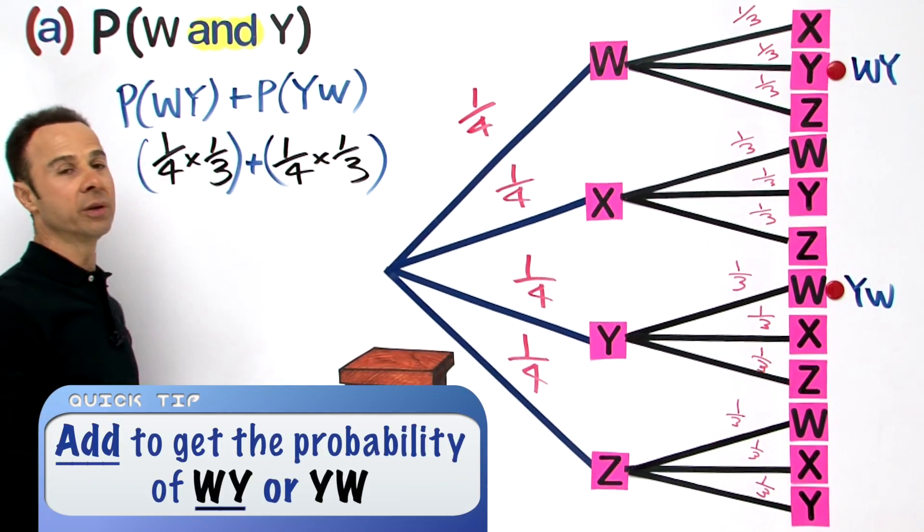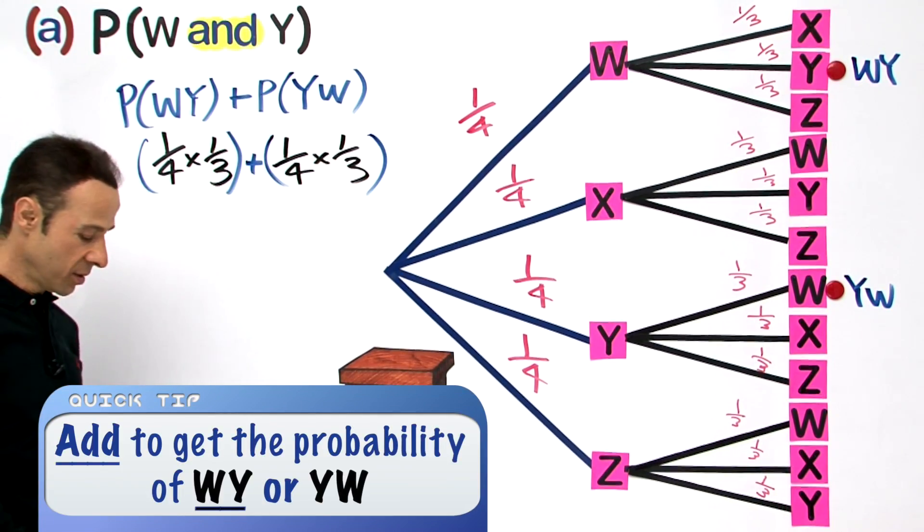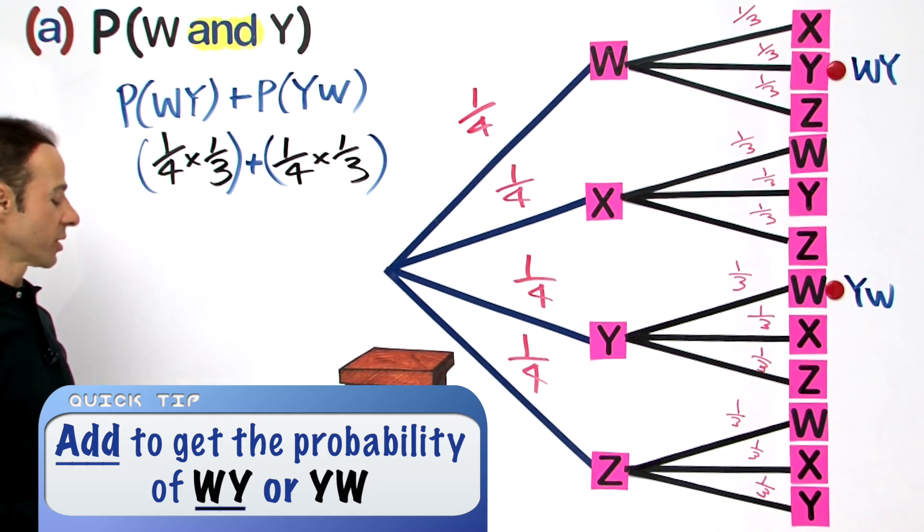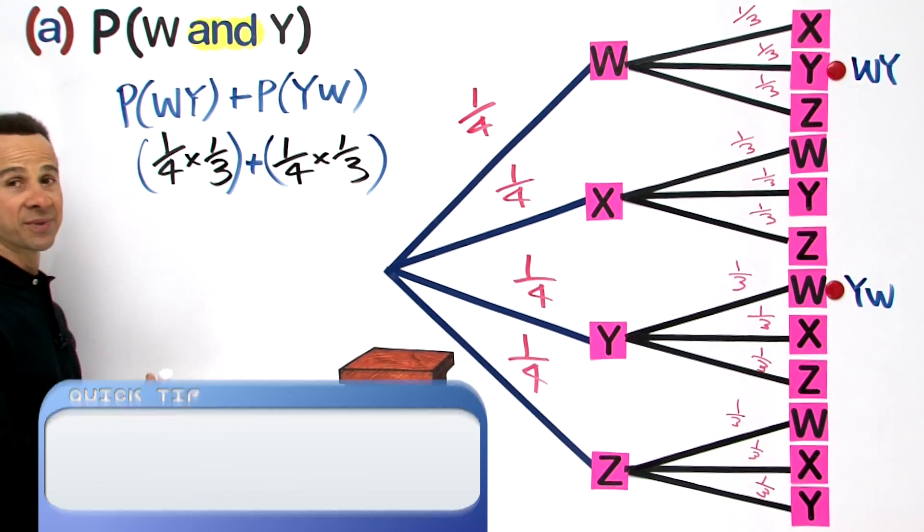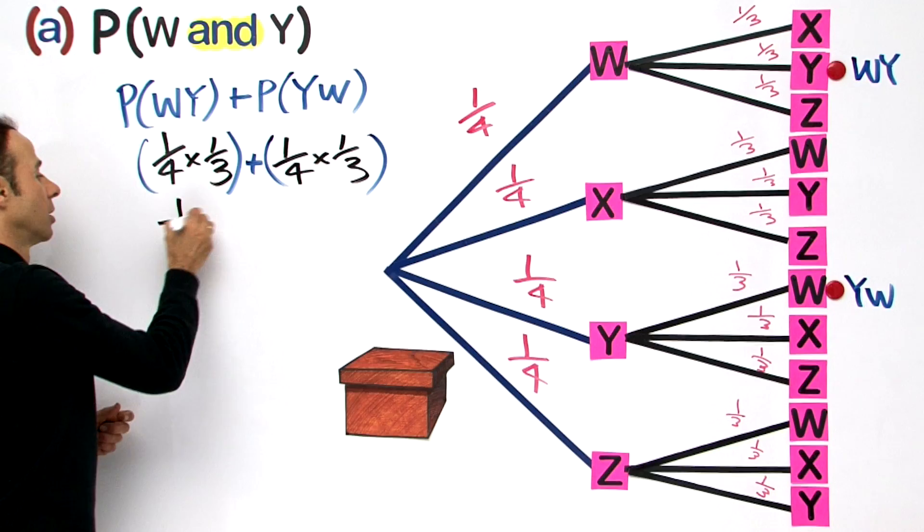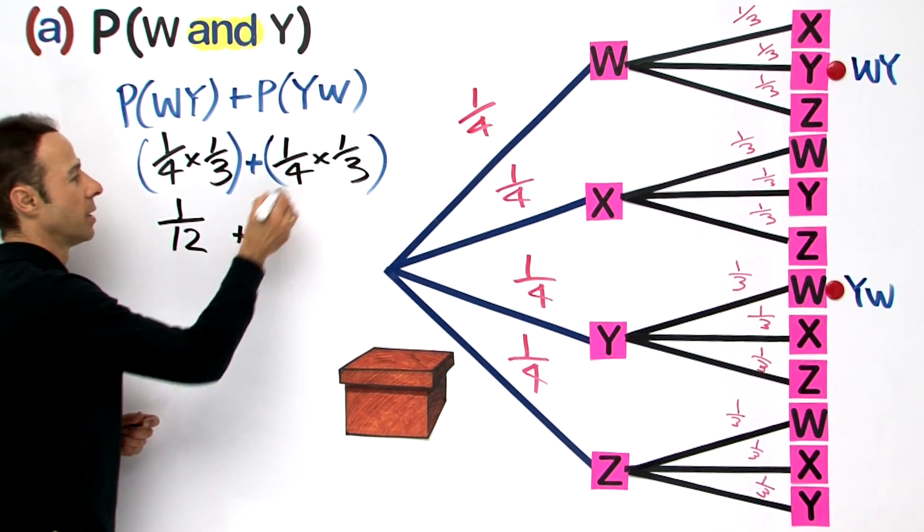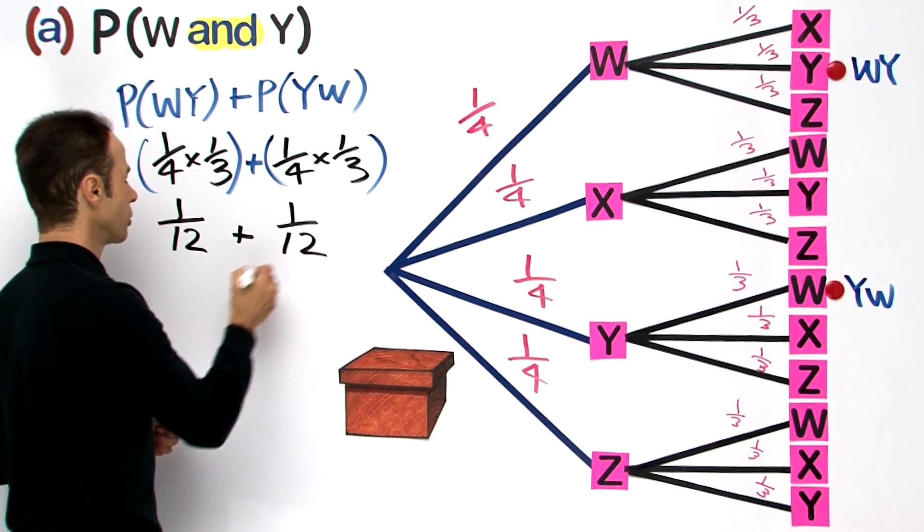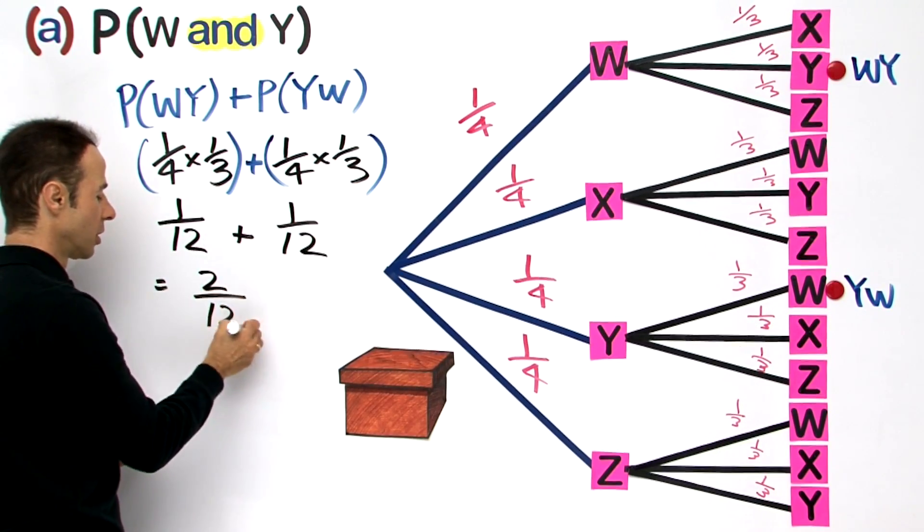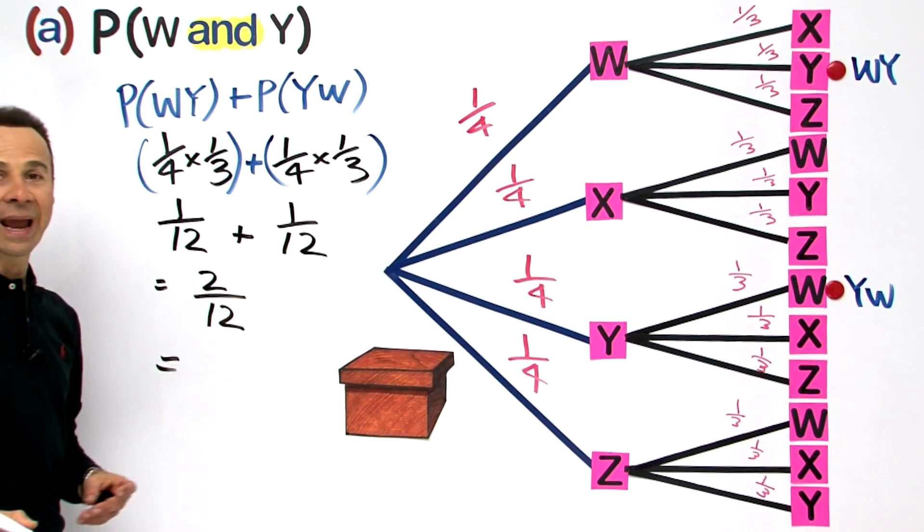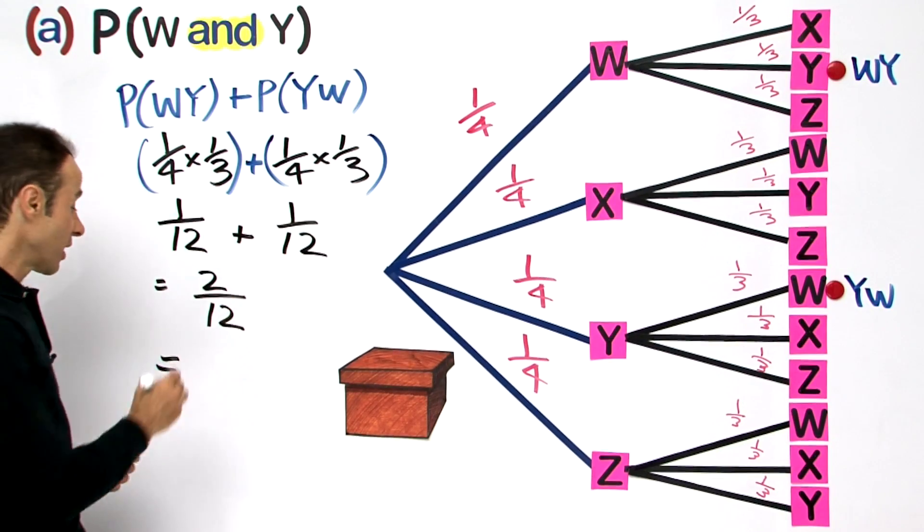Let us put the brackets, and of course let us put that OR in between. We use a plus to represent OR. Let us work this out now. A quarter times a third is 1/12, and 1/12 all together gives us 2/12, which equals a final answer of 1 chance out of 6.